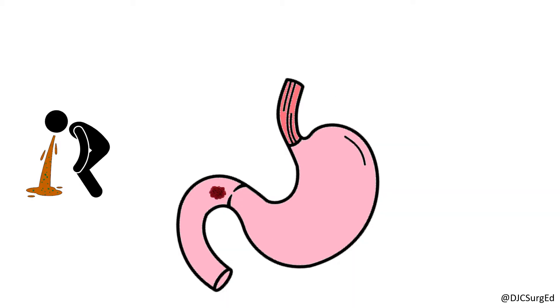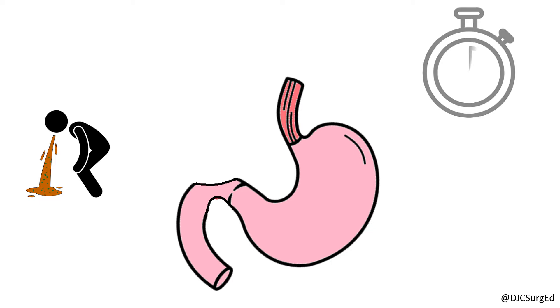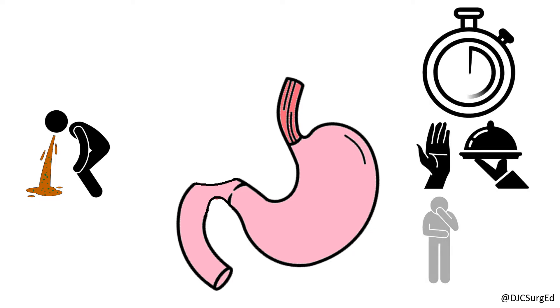Gastric outlet obstruction occurs from acute inflammation or chronic scarring of the duodenum causing a mechanical obstruction. Symptoms include delayed gastric emptying, anorexia, nausea, and emesis.